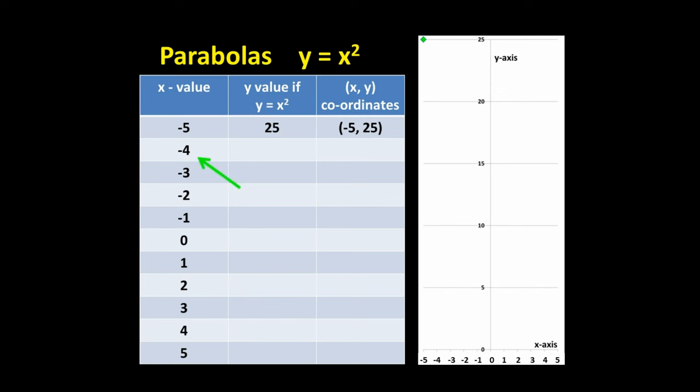Negative four squared is sixteen, so the point we plot is at (-4, 16). Negative three squared is nine, so our next point is at (-3, 9). If we keep plotting all the points, we end up with a smooth symmetrical curve. This curve is called a parabola.